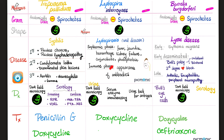Leptospirosis: the first phase is the septicemic phase with fever, jaundice, hemorrhage, kidney failure, conjunctivitis, and photophobia. When antibodies develop you enter the immune phase, and spirochetes are kicked into the urine — visualize them by urine dark field microscopy. Lyme disease: early stage has erythema migrans (bullseye rash); early disseminated has Bell's palsy (unilateral or bilateral — cranial nerve 7 paralysis) and conduction blocks including third-degree heart block; late disseminated has arthritis, encephalitis, and peripheral neuropathy.